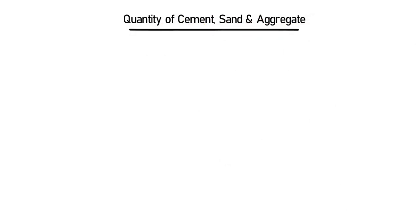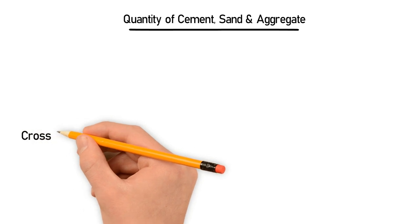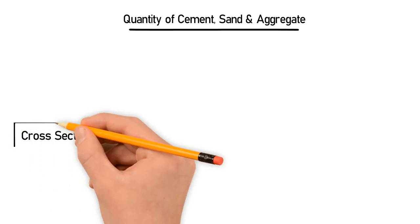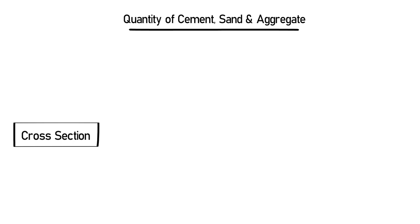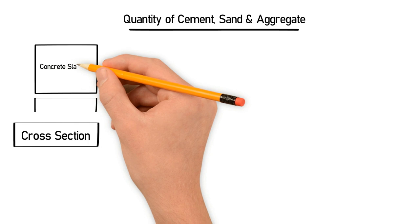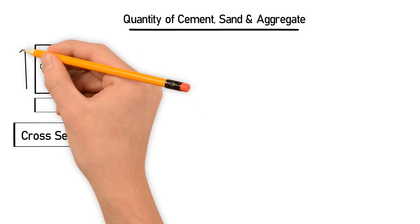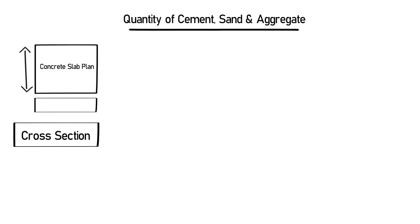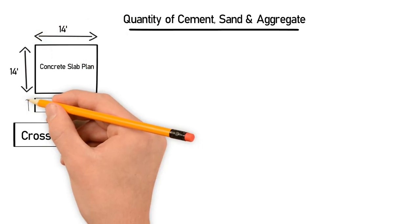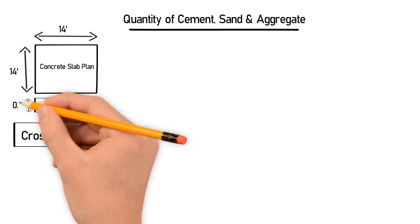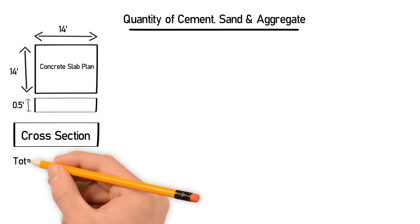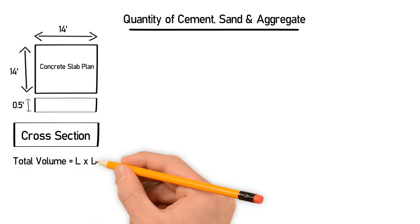Let's take the example of a concrete slab. Let's draw the cross-section of the concrete slab first. Here you can see the length is 14 feet, the breadth is 14 feet, and the depth is 0.5 feet.